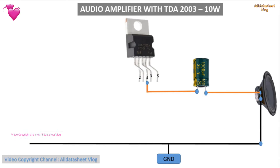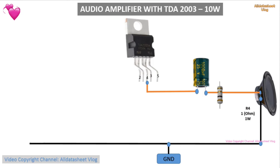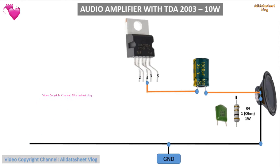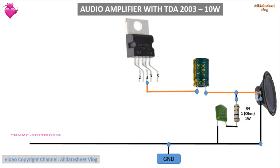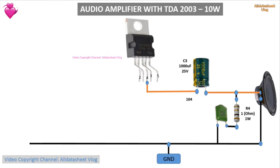Since it only has one channel, two channels must be produced to use it in stereo. The power source used for this project must be capable of supplying 2 amps. The heat dissipation ability of the integrated circuit is important because temperature determines its lifespan. We can add a fan used in the computer power supply, and to prevent it from making noise, we add a resistor and a capacitor. Computer fans do not consume much power and the resistance can be from 22 to 47 ohm, as long as the fan starts well.